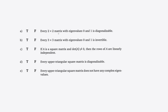Part A: true or false — every 2x2 matrix with eigenvalues 0 and 1 is diagonalizable. This is going to be really easy once you see it; the key is noticing the thing that makes it obviously true. The reason it's true is because you have a 2x2 matrix with two distinct eigenvalues. There's a theorem that says if you have n distinct eigenvalues, then the matrix is diagonalizable. So once you notice you have two distinct eigenvalues and it's a 2x2 matrix, it has to be diagonalizable. This one is true.